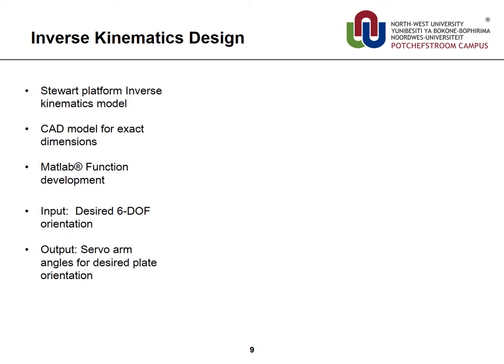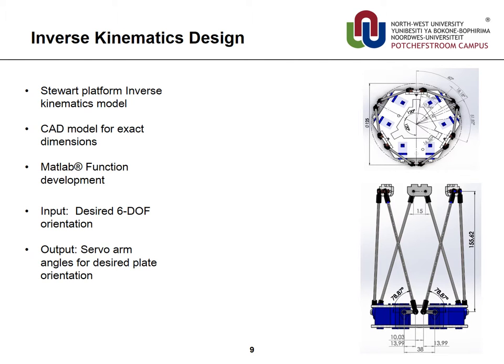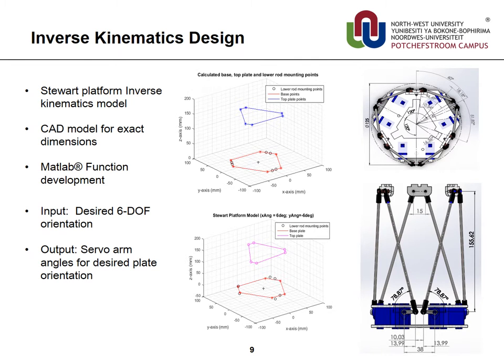An online solution for the inverse kinematics enables the system to provide the required servo arm angles for the desired plate orientation. This was developed by using the CAD model for exact dimensions and then relating the top attachment points to the bottom attachment points using trigonometry.